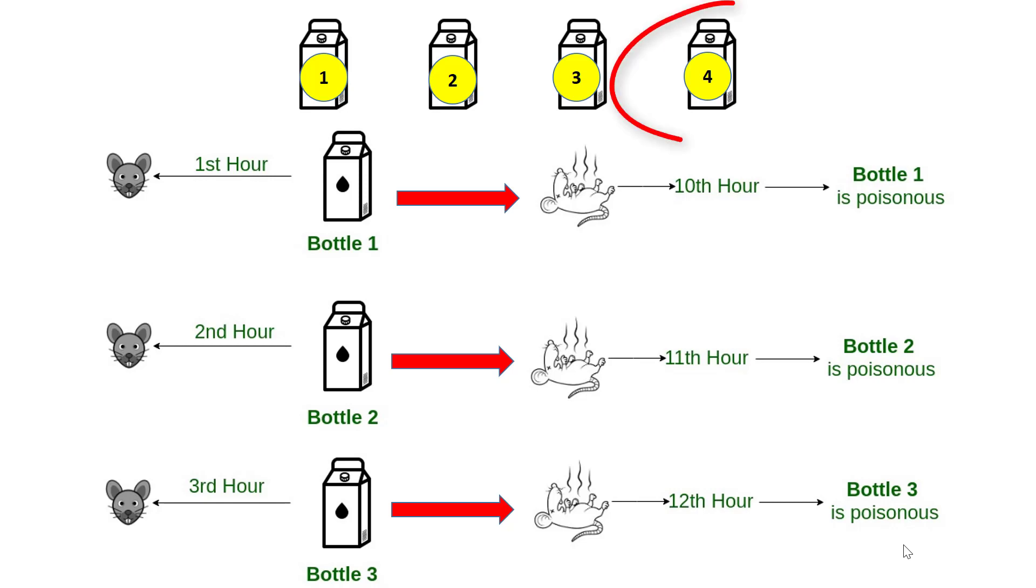And if the rat does not die even after 12 hours, definitely the fourth one is poisonous. And you don't have to wait till 13th hour to find out whether it's true or not. So, thus after exactly 12 hours, you would be able to determine the poisonous bottle.